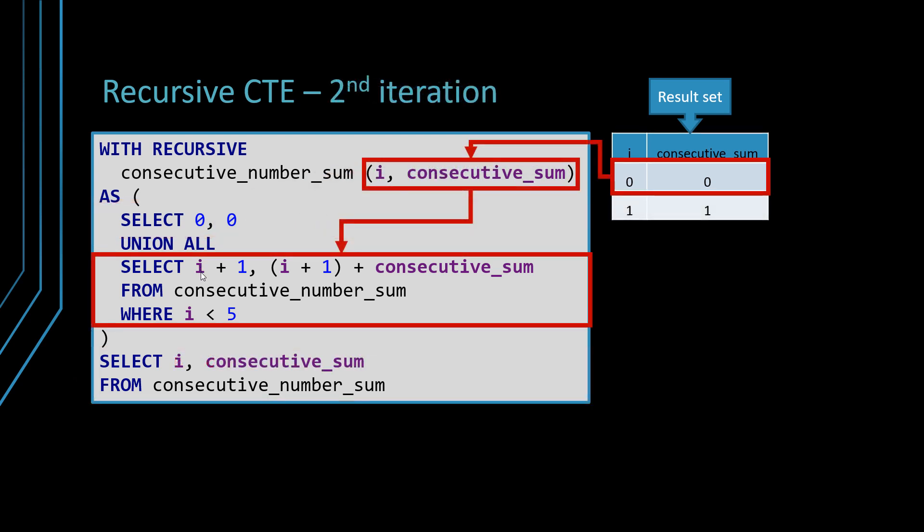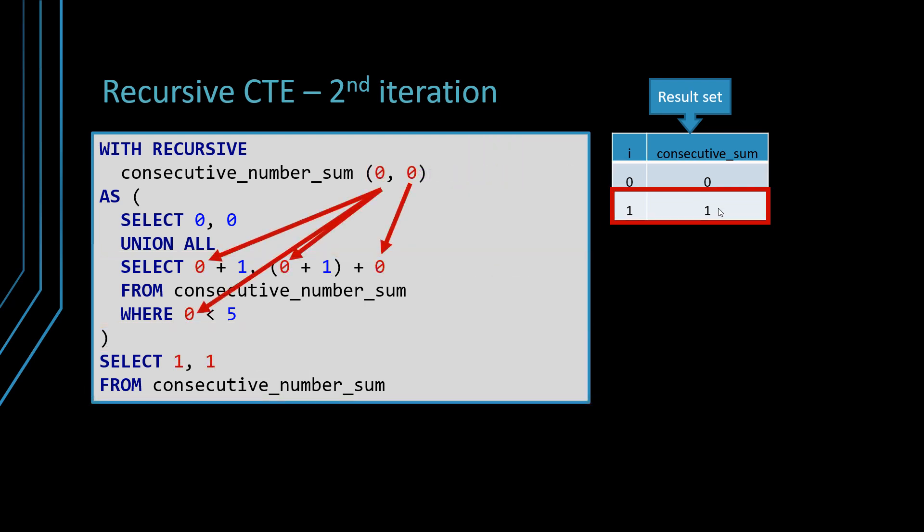So when the next iteration comes in, it's going to be given the values that were calculated previously. And that's why we can calculate the value of zero plus one, zero plus one plus zero, one and one.